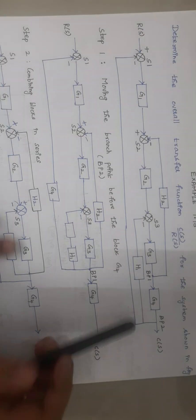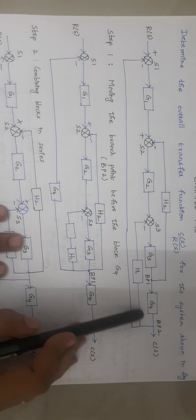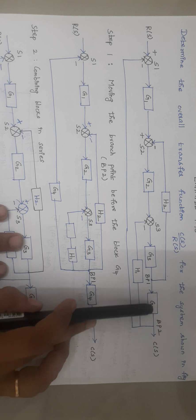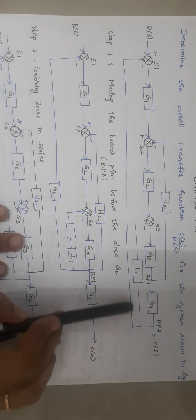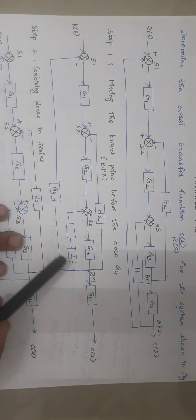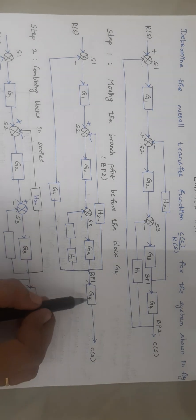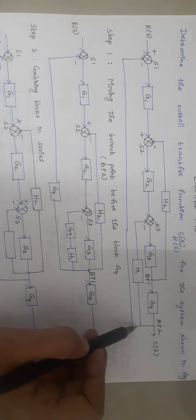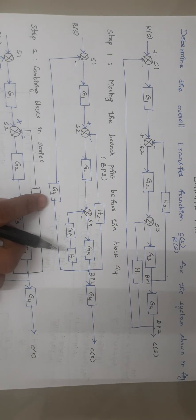Here I am going to move this branch point to before block G4. As I am moving this branch point before G4, I have to include G4 to these two branches because they originate from the same point. So I have to include G4 in this line and in this branch also. Branch point 2 is now moved to branch point 1 position. This is our first step.